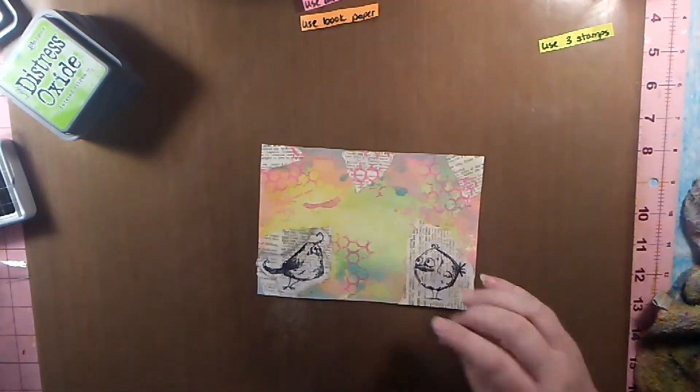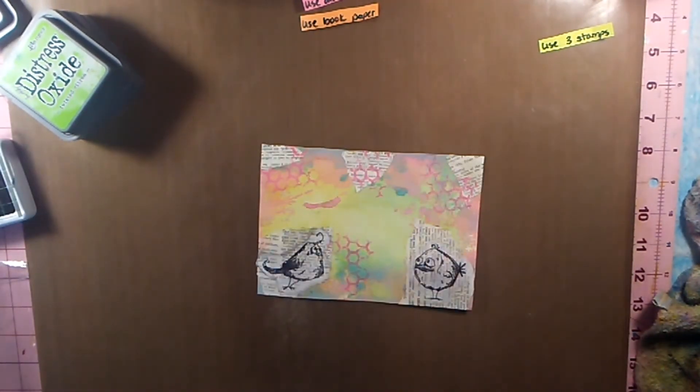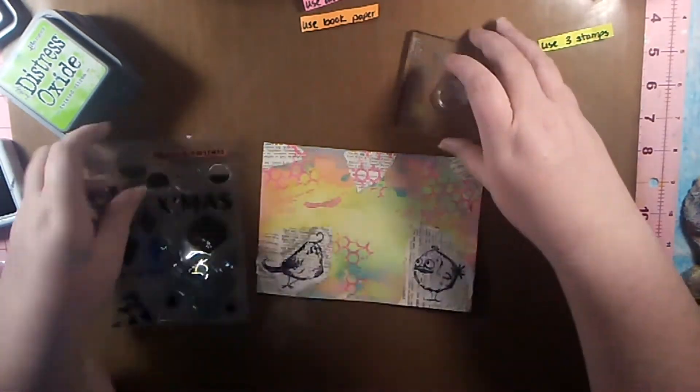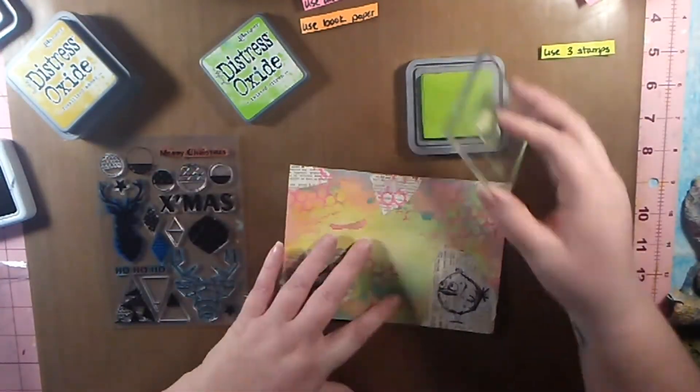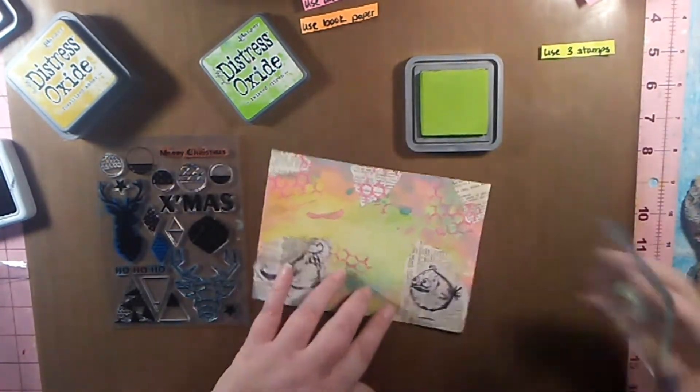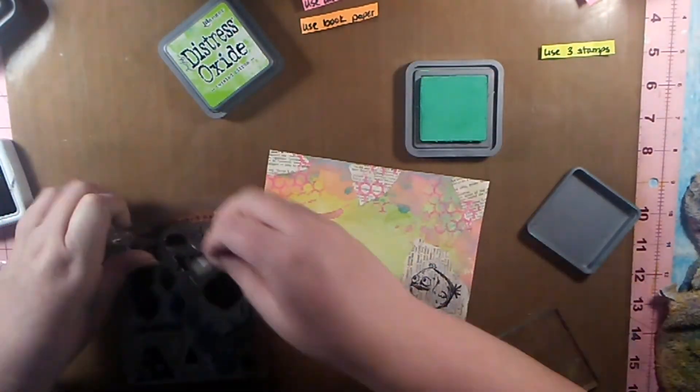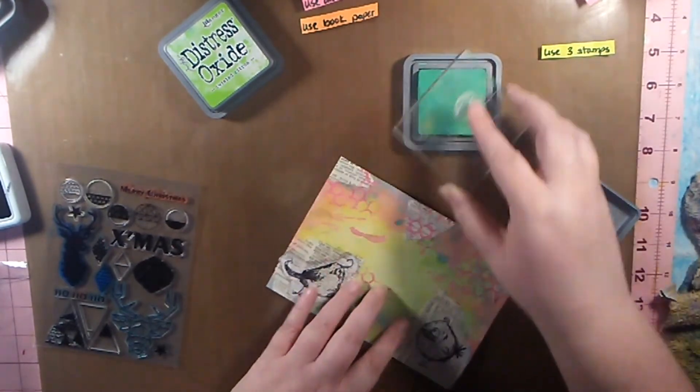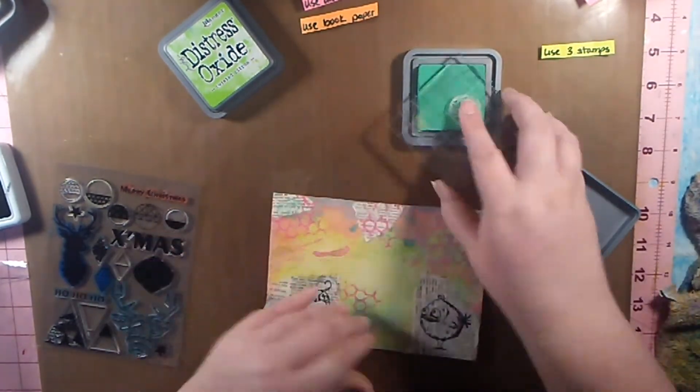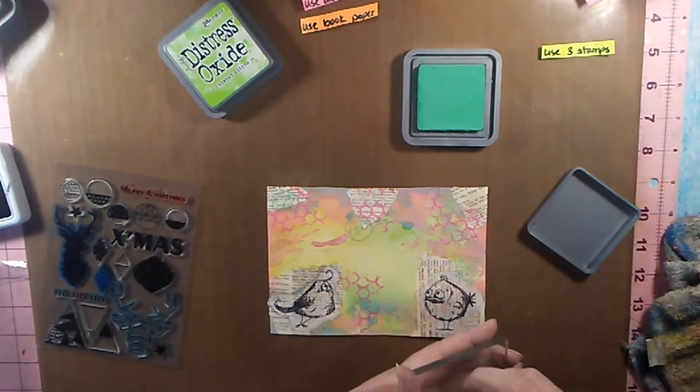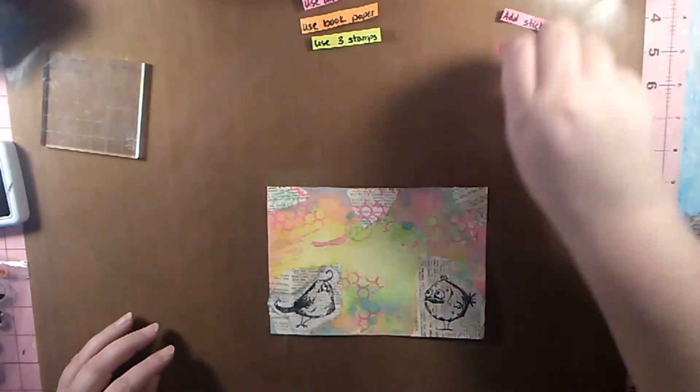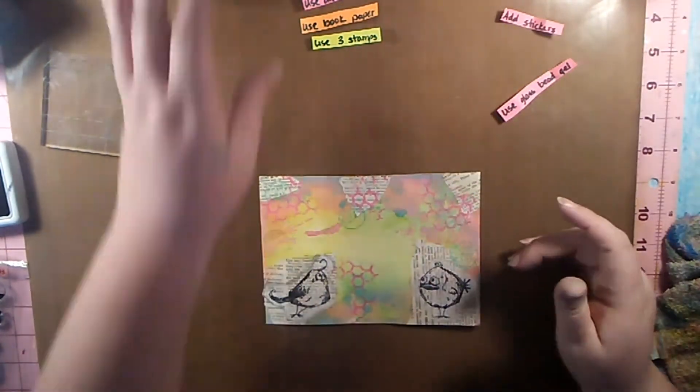To continue on with the piece, it said use three stamps. So another stamp that I decided to use was this kind of background stamp that looks a little bit like chicken wire. I stamped that with the Picked Raspberry distress oxide. Then I have this other stamp set that have these little shapes and really cool geometrics—there's like circles and triangles and diamonds. I take a couple of those and stamp them with the Cracked Pistachio.